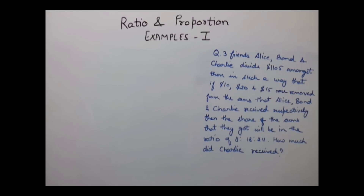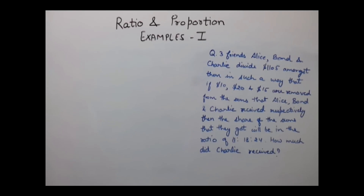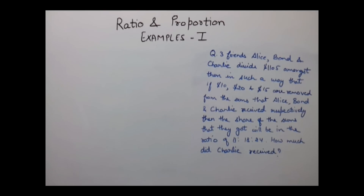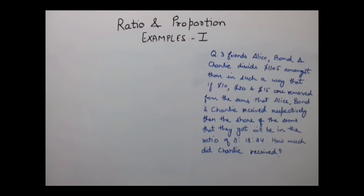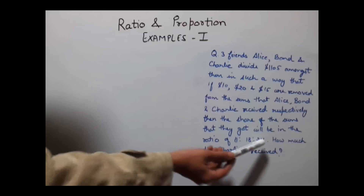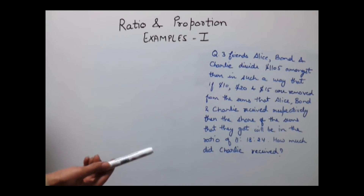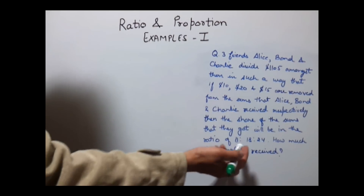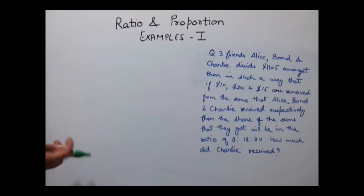Let's have another example. Three friends Alice, Bond and Charlie divide $1,105 amongst them such that if $10, $20 and $15 are removed from the sums that Alice, Bond and Charlie received respectively, then the remaining sums are in the ratio 11:18:24. How much did Charlie receive? The ratio is 11:18:24 and we can calculate the remaining sum by subtracting 10+20+15 from the total, then divide into that ratio.